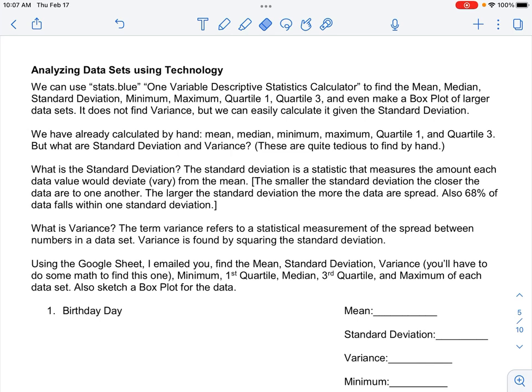And then variance, the term variance refers to a statistical measurement of the spread between numbers in the data set. So pretty similar to the standard deviation. Variance is found by squaring the standard deviation. So on stats.blue, they're going to give us the standard deviation. We will just take that number squared to find our variance.